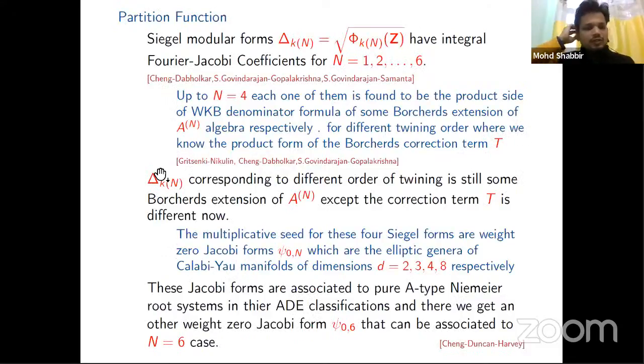So here we talk about the partition function. The Siegel modular forms—the square roots of Φ_N—we talk about the square roots of Φ_N here, which have integral Fourier coefficients. Up to N = 6 and up to N = 4, each one of them has been found to be the perfect square of a WKB denominator formula of some Borcherds extension of an algebra, respectively. For data corresponding to different orders of Z_N still, some Borcherds extension of A_N, except the correction term T is different.